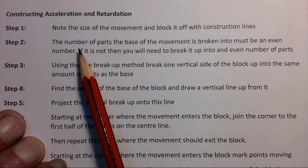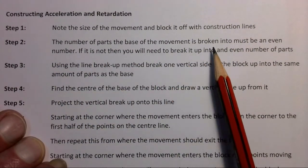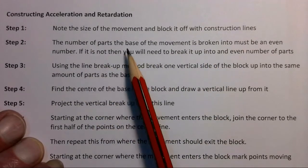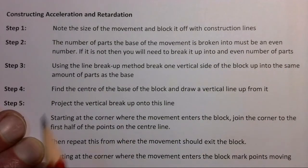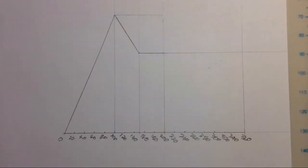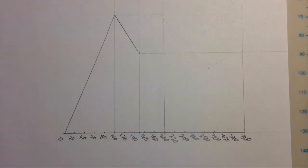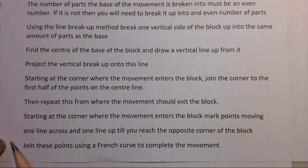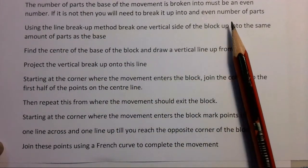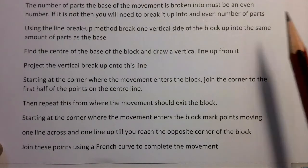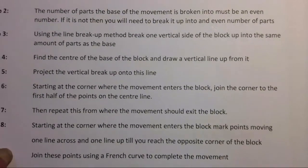For step two, we check the number of parts the base of the movement is broken into — it must be an even number. Counting, we get eight parts, which is an even number. If it weren't even, you'd have to break it up further into an even number of parts, but most of the time it's always even.